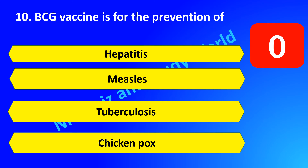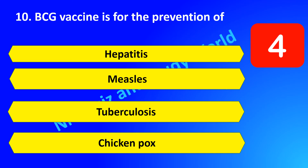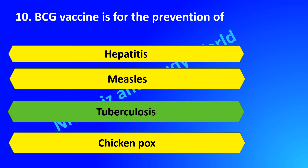BCG vaccine is for the prevention of dash. Is it hepatitis, measles, tuberculosis, or chicken pox? The answer is tuberculosis.